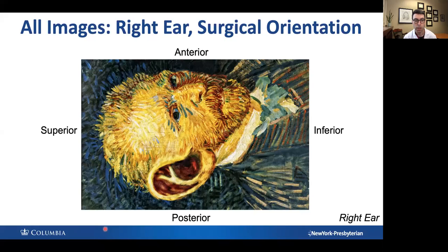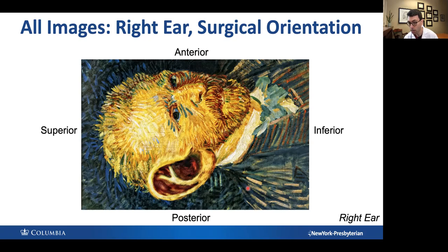One thing I just want to mention up front: every single anatomic image that I show you will be with this orientation — a right ear with superior to your left, inferior to your right, anterior in front, and posterior in the back. This is important because for beginners, when you read anatomy textbooks and it's constantly switching between left ear and right ear, I find that very confusing. Once you already know the anatomy it's good to switch between left and right, but it's not good for beginners. So it will be consistent here.